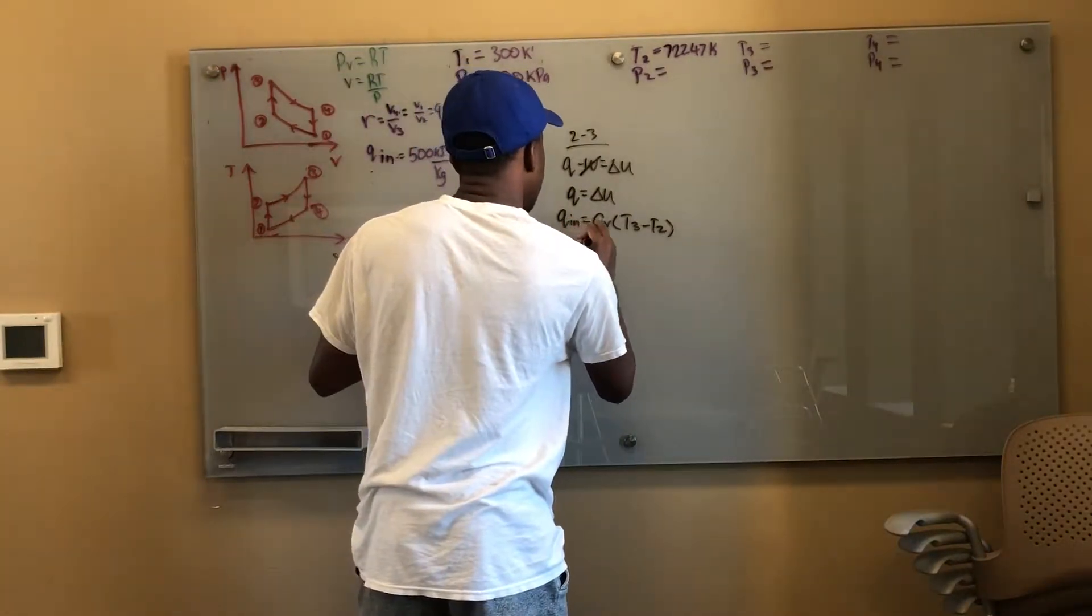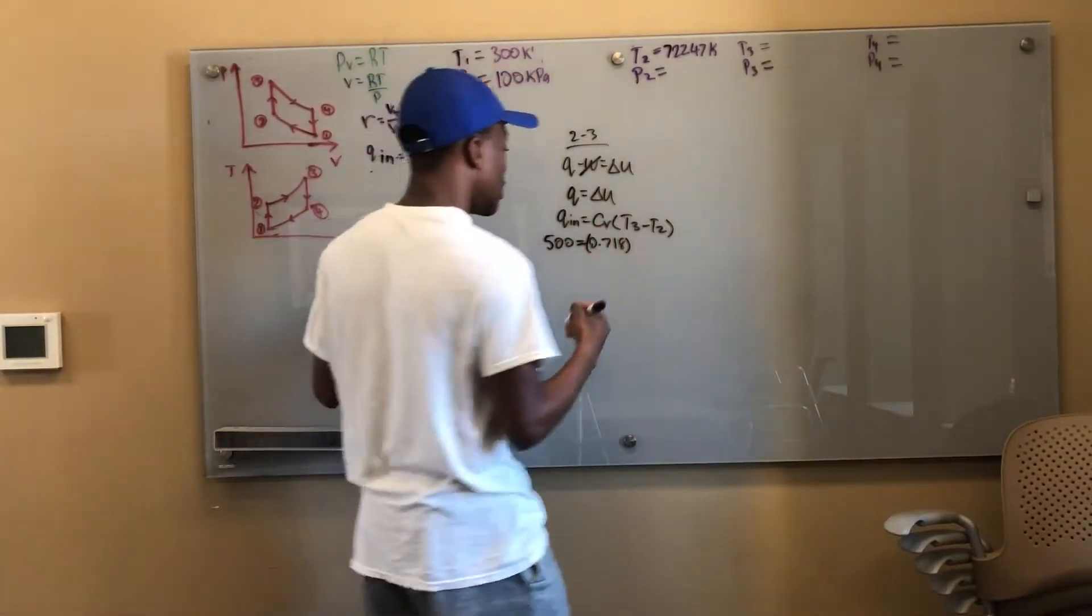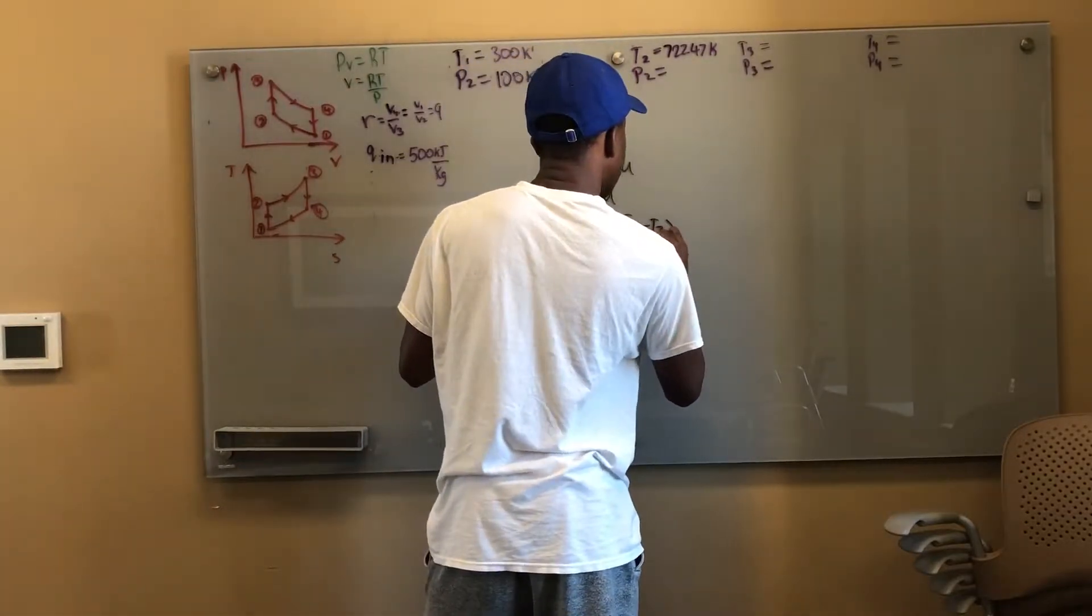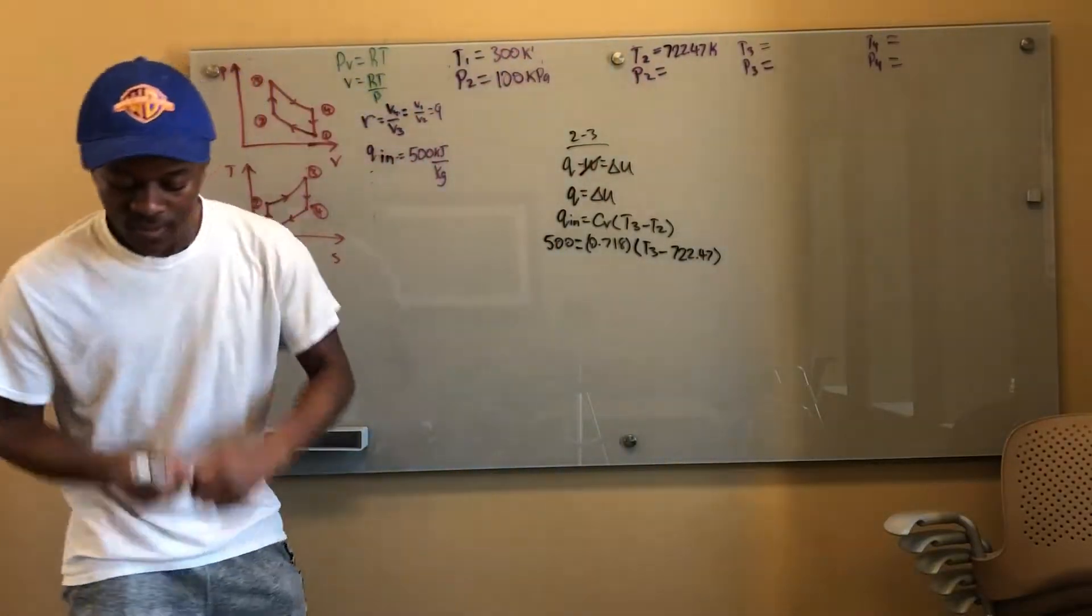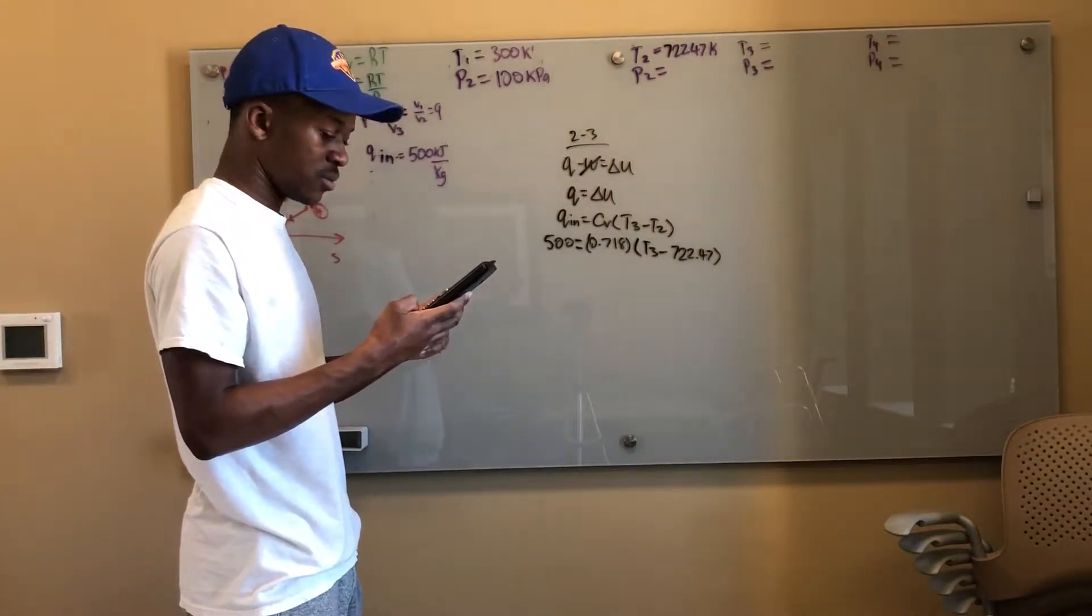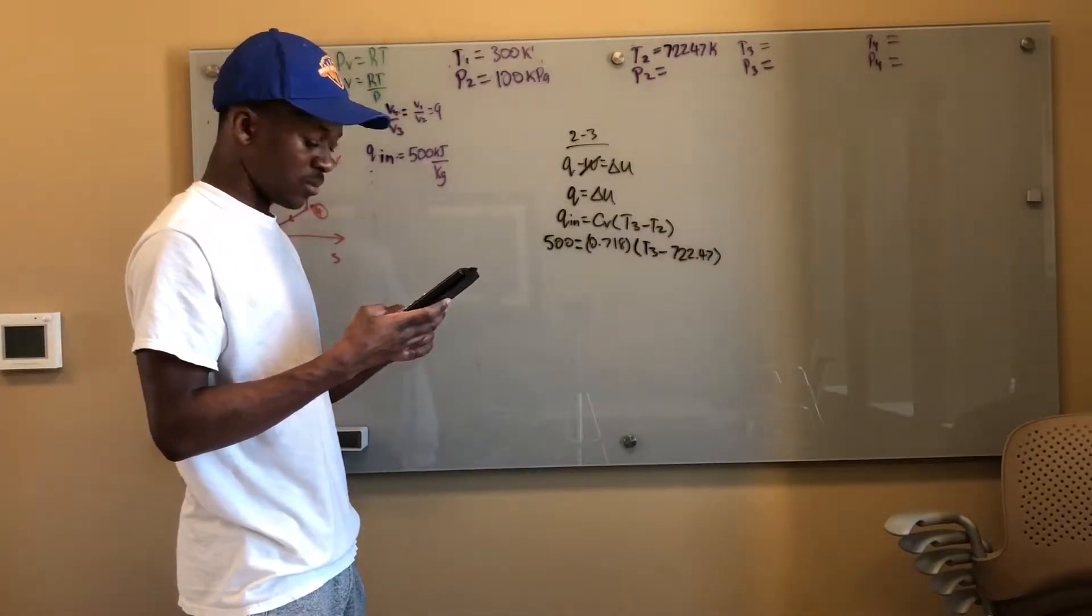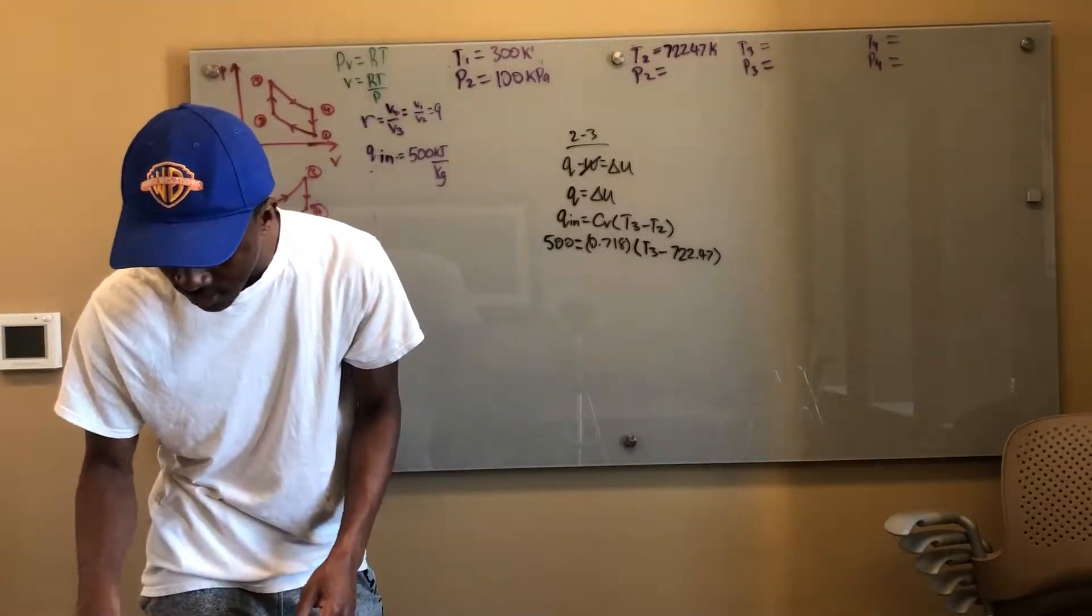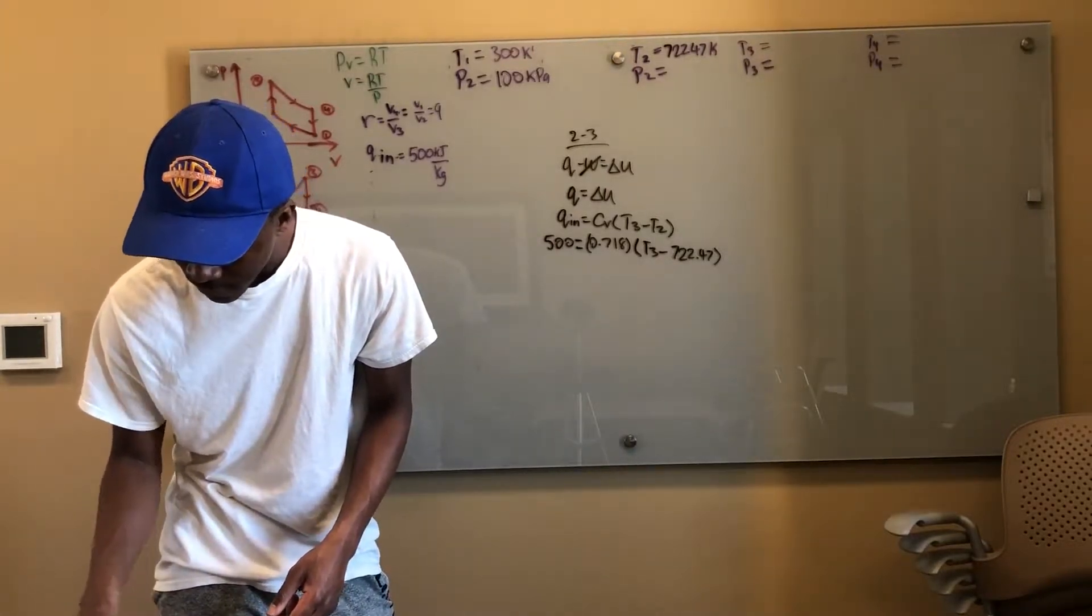I know it's T3 minus T2 because T3 is higher than T2 and we want a positive number. So this gives me 500 is equal to 0.718, that's the c_v for air you can find that in your tables, times T3 minus T2. I don't know my T3 but I do know my T2, 722.47. That gives me once I solve for T3 that T3 is equal to 1418.85 Kelvin.